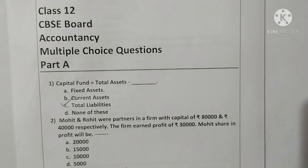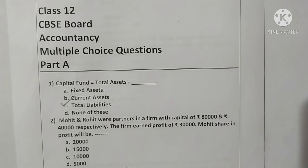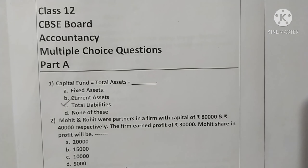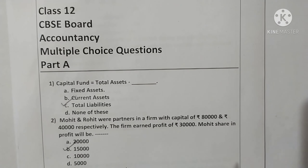Question two: Mohit and Rohit were partners in a firm with capital of Rs. 80,000 and Rs. 40,000 respectively. The firm earned a profit of Rs. 30,000. Mohit's share of profit will be — since profit sharing ratio is not given, it is treated as equal ratio. Equal proportion for Mohit will be Rs. 15,000. Option B is correct.